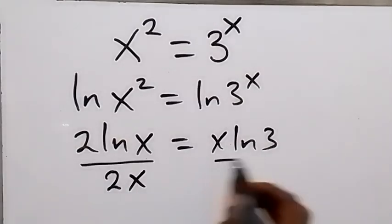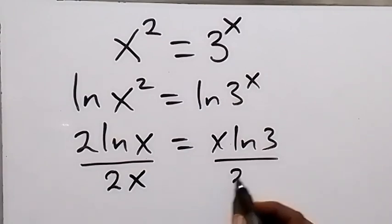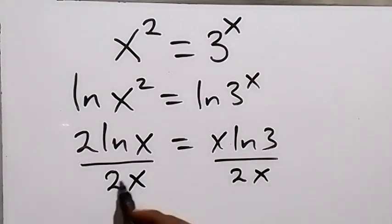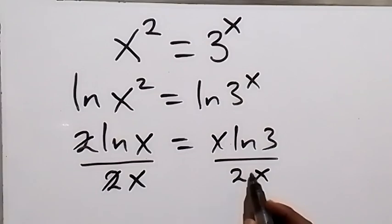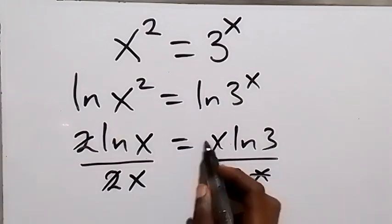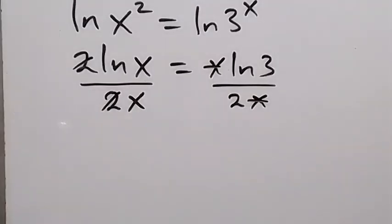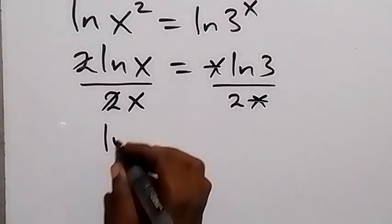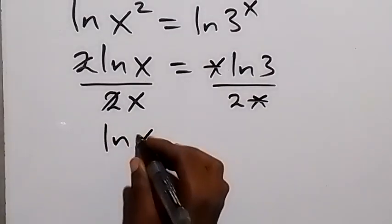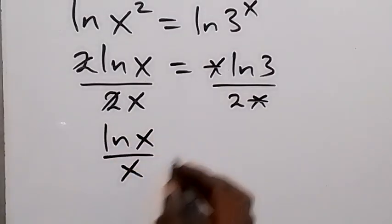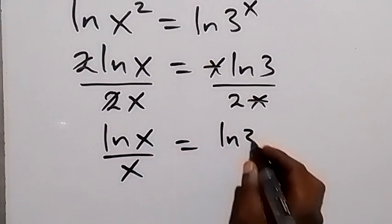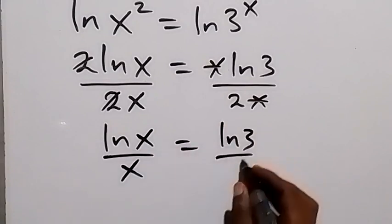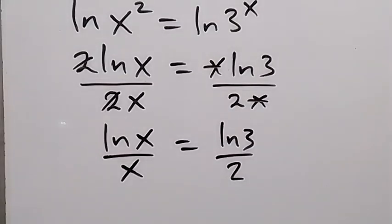When we divide both sides by 2x, the 2 cancels with 2 and x cancels with x. What we have left is ln(x)/x equals ln(3)/2.